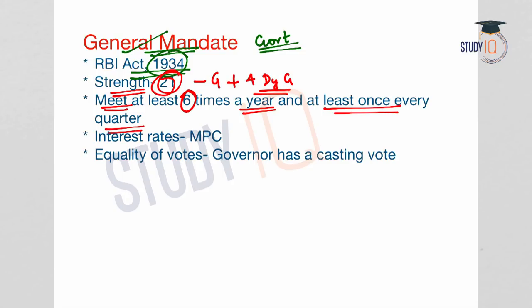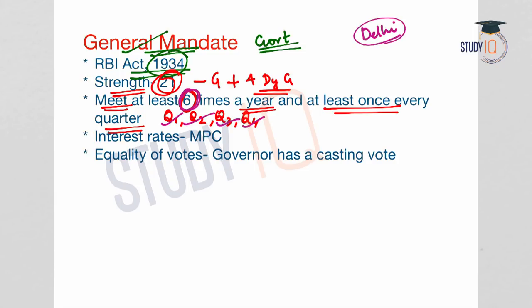In a financial year there are four quarters — Q1, Q2, Q3, and Q4 — and it is mandatory that the board should meet at least once in each quarter, with a minimum of six times in a year. The board generally meets in Delhi at least once, when the Finance Minister addresses the full board, usually after presenting the budget for the coming year.